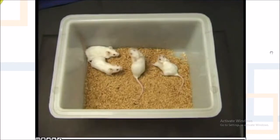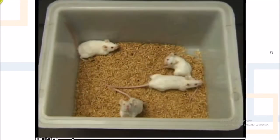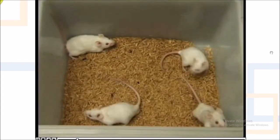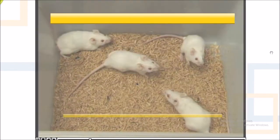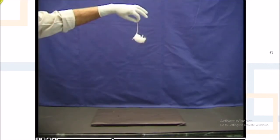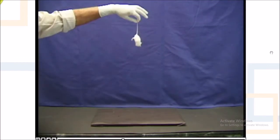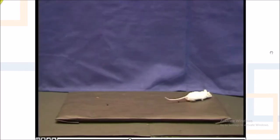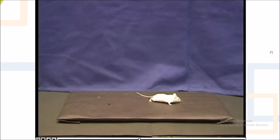To study the effect of sedative hypnotics in mice by writing reflex method, select three adult healthy mice of either sex weighing not less than 20 grams. Writing reflex means the ability of an animal to maintain and regain the body balance or posture. Drop the mice individually from a predetermined height and observe the writing reflex in each of them. The mice regain their normal posture quickly, indicating presence of writing reflex.